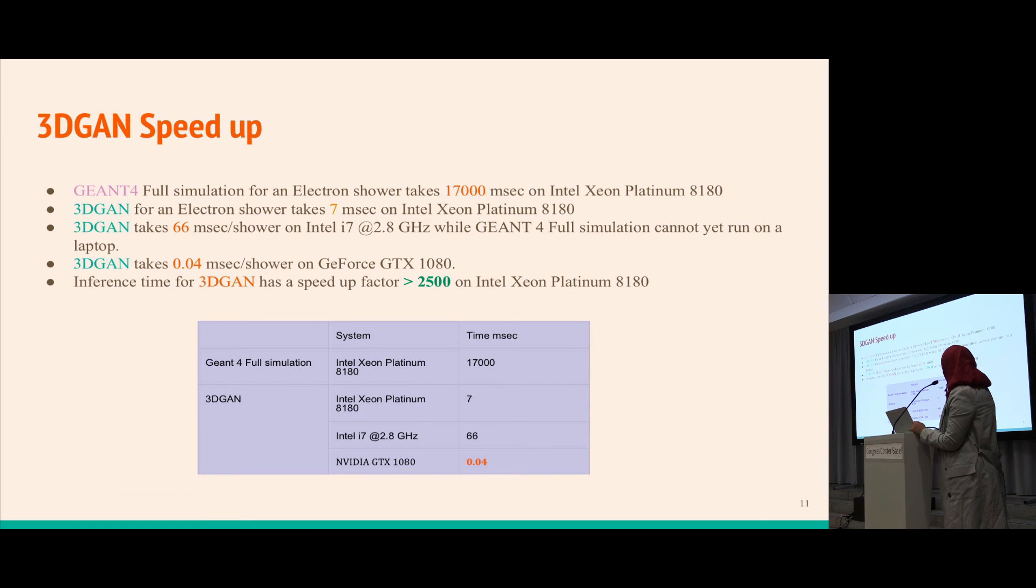Now I'll give some figures about the level of speedup we achieve with 3DGAN. Using Geant4 full simulation, an electron shower takes about 17,000 milliseconds on Intel Xeon Platinum 8180. On the same hardware, 3DGAN takes about 7 milliseconds to generate the same shower.